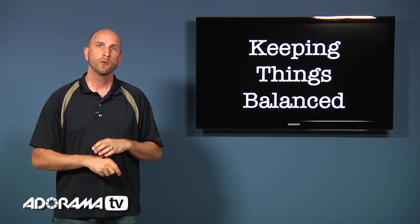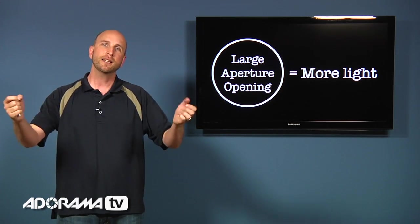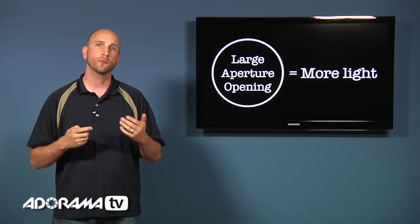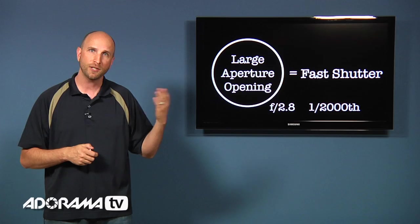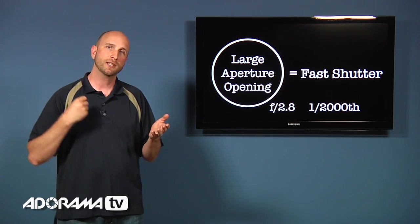So let's talk about how the aperture and shutter work together as a team to keep our light balanced, so we get a proper exposure. Well let's say that we have a really wide open aperture. That's going to let through a lot of light. We need to balance that somehow. Well we can use a really fast shutter speed. And that fast shutter speed is going to balance out how much light is coming through.